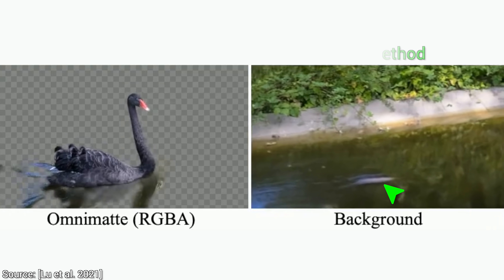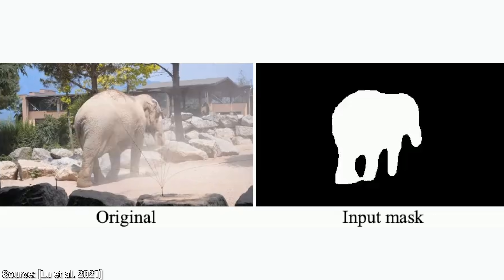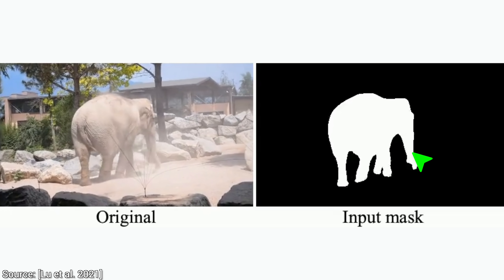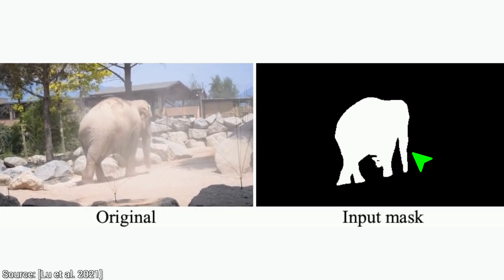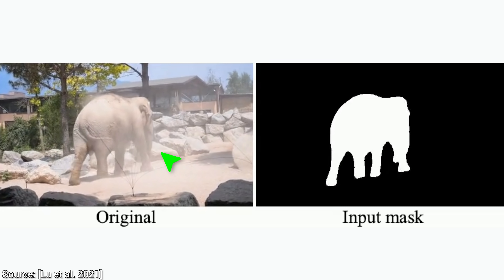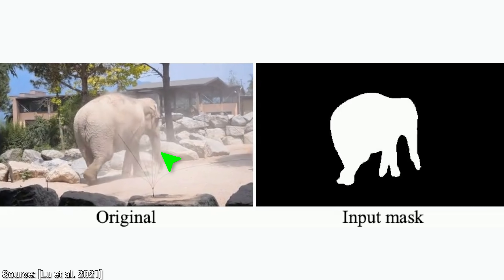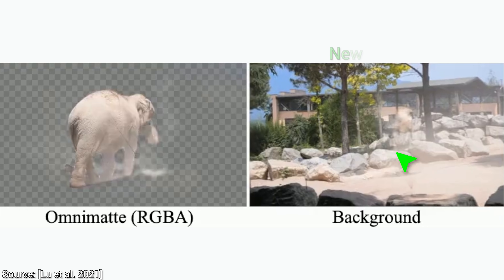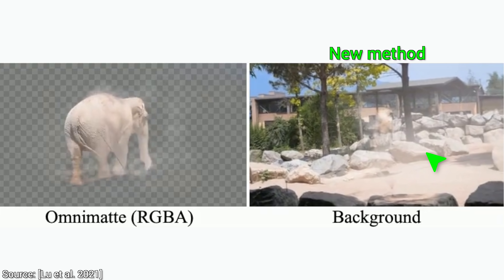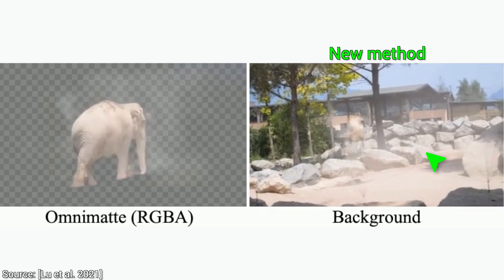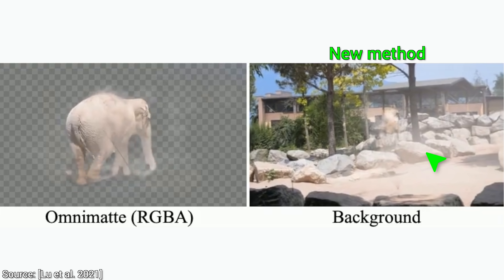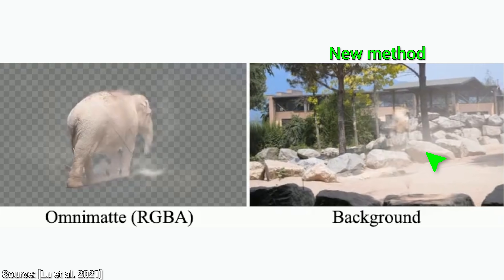Nothing to see here. And look at this elephant. Removing just the silhouette of the elephant is not enough — it also has to find all the dust around it, and it gets worse: the dust is changing rapidly over time. And believe it or not — wow — it can find the dust too, and remove the elephant. Again, nothing to see here.